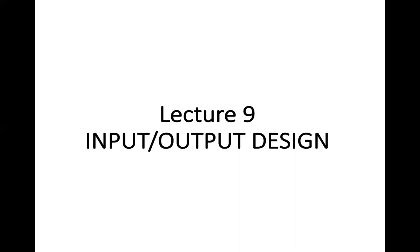So first of all, you gather requirements from the user. After that, you gather information from the user, then validate and thoroughly examine it. After performing thorough analysis — studying the feasibility and everything — and validating the information gathered, we will start the designing of the system. The first thing we will discuss today is input-output design. Today we will talk about input design, and tomorrow we will talk about output design.